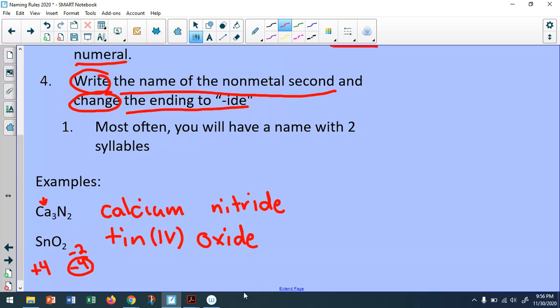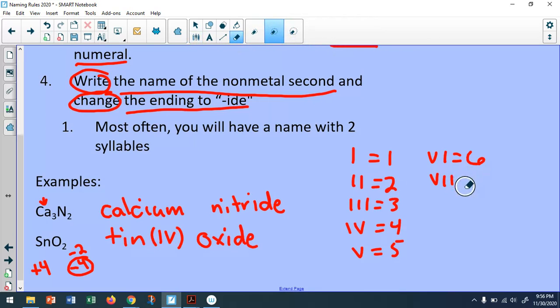So I equals one. II equals two. III equals three. IV equals four. V equals five. VI equals six. VII is seven. VIII equals eight. IX equals nine. And X equals 10. That should cover anything that we would possibly need with the ones that I will have you do.